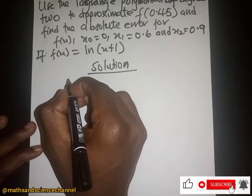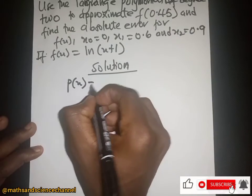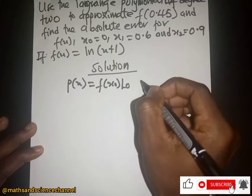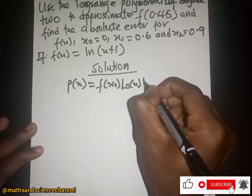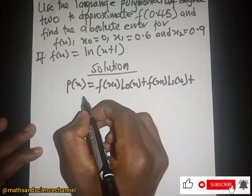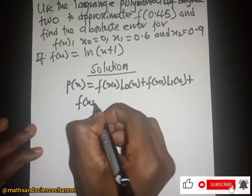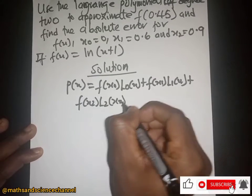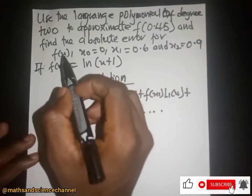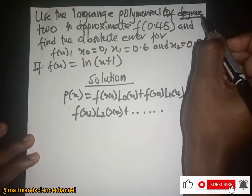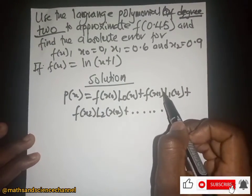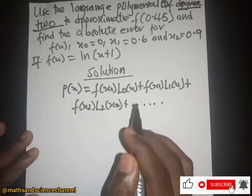From the Lagrange polynomial, the function p(x) is given by f(s₀)·L₀(x) plus f(s₁)·L₁(x) plus f(s₂)·L₂(x), and so on. The question says we should do it to the second degree, so we have the zeroth, first, and second degree terms.